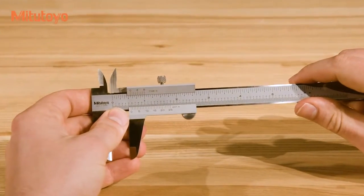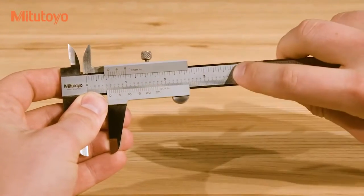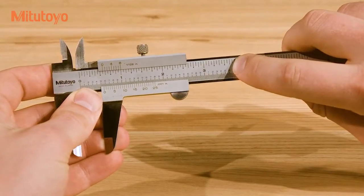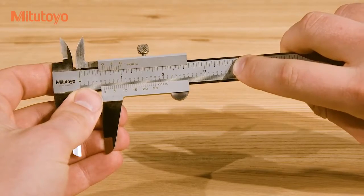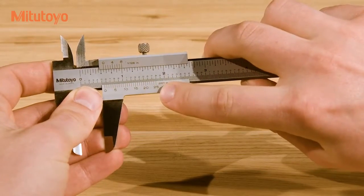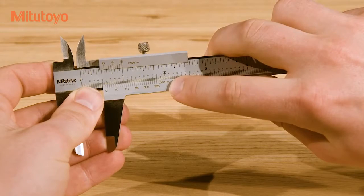The vernier scale is located on the sliding jaw. The number of lines is not the same for all calipers, but on most current inch vernier calipers, you'll find 25 graduations for a final graduation of .001 inches.